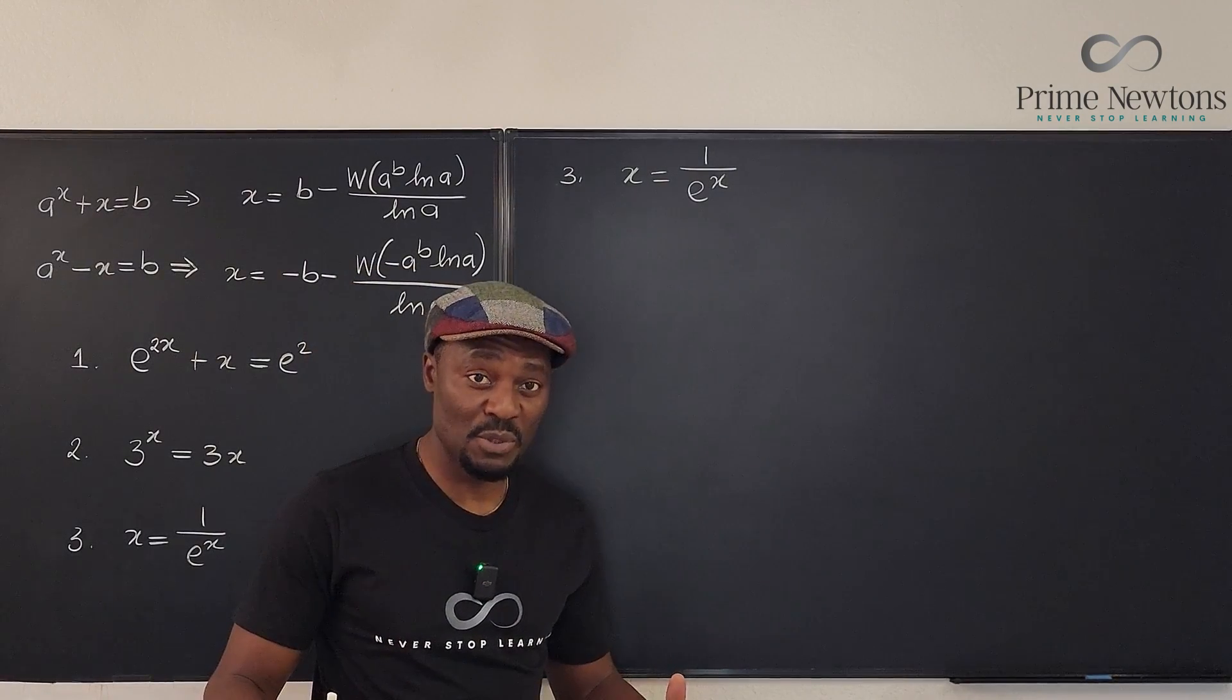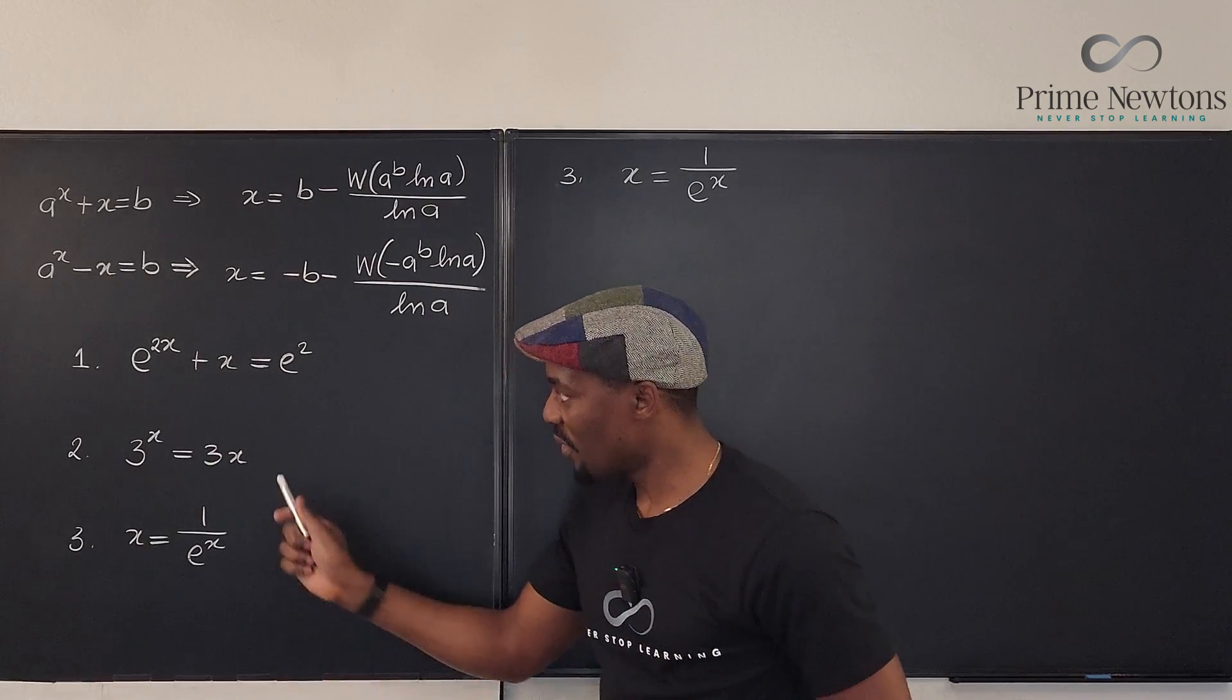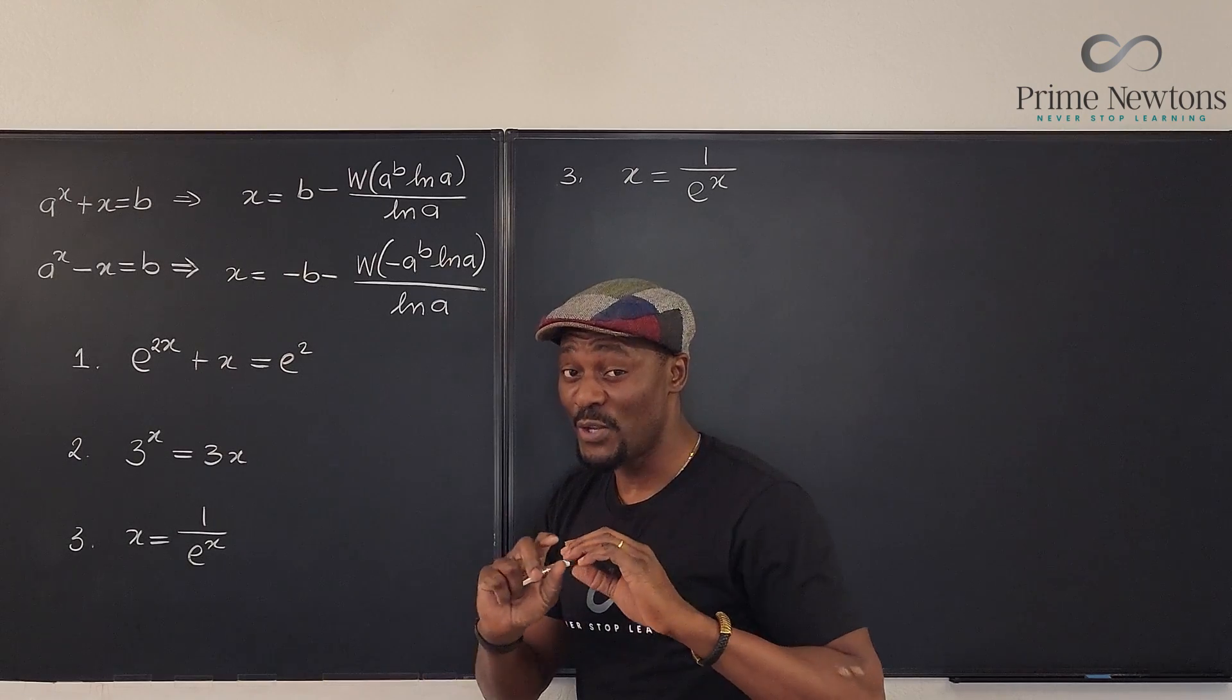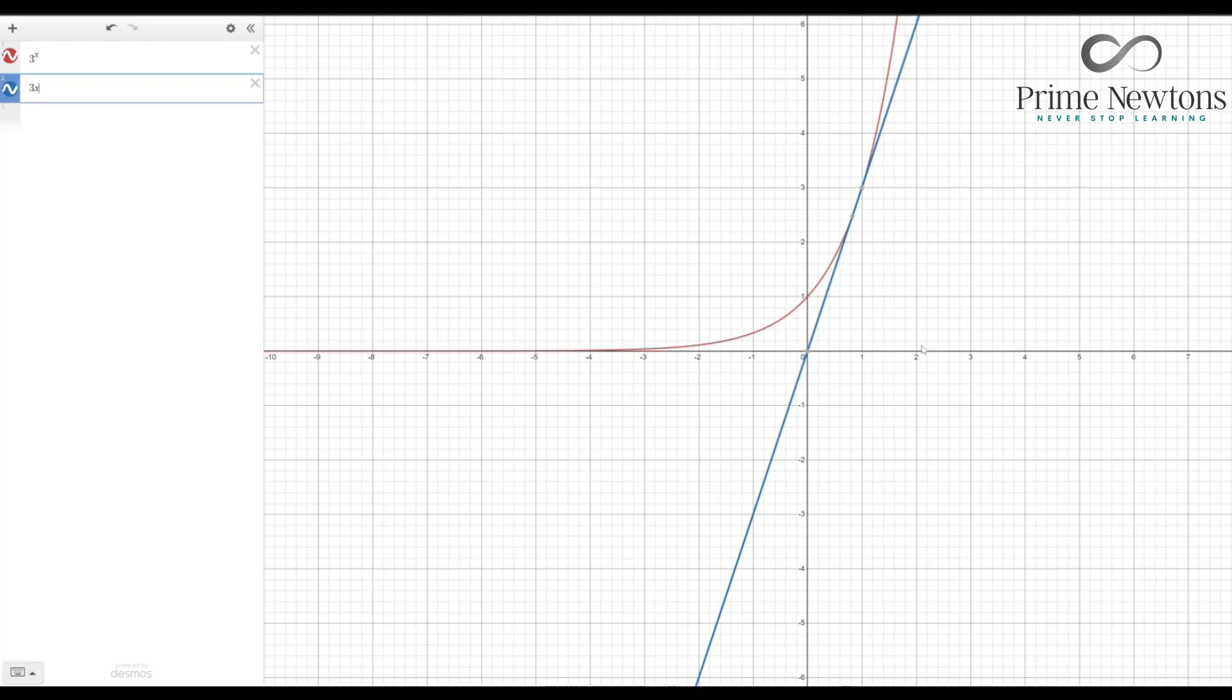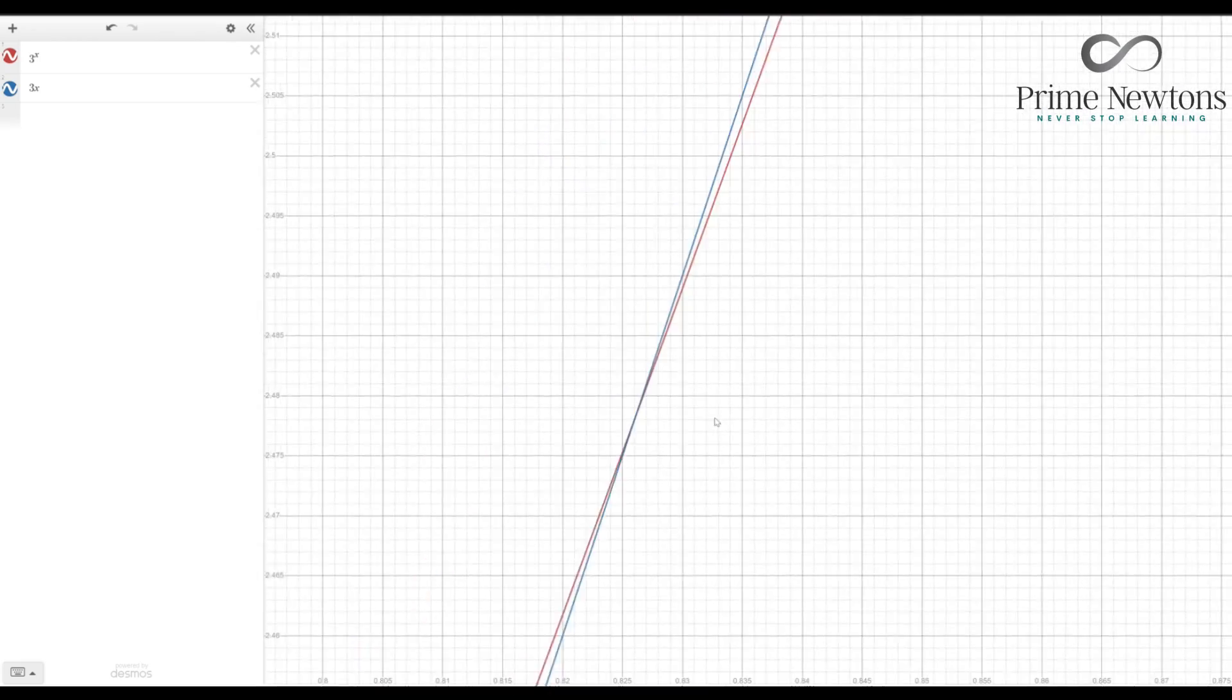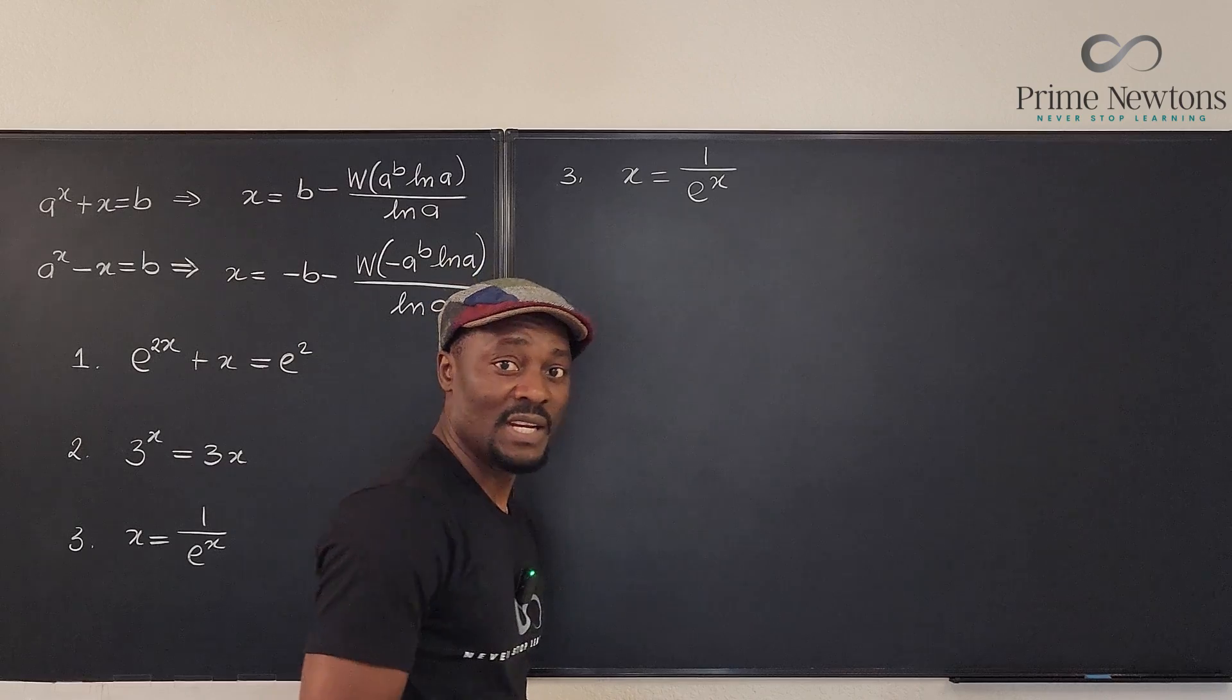Let's do number three. I intentionally skipped number two because I want you to do it by yourself if you're interested. By the way, you should get two answers for this. And clearly, one of the answers is... Well, you can just look at it clearly and you see what one of the answers is. But there are two answers. When you zoom in, you're going to see that there's a second answer.